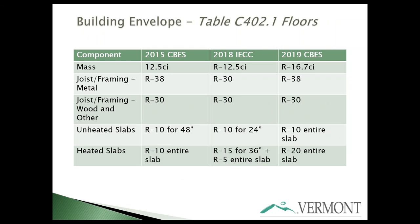For floors, joist framing — metal or wood — hasn't really changed. For slabs there has been significant change: unheated slabs previously required R10 for 48 inches, now R10 for the entire slab. Heated slabs previously required R10 for the entire slab, now they require R20.